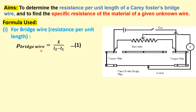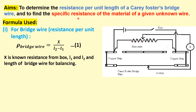Rho can be found out by x divided by (L2 minus L1). If we put the unknown resistance on the left side and note the balancing condition as L1, then put the unknown resistance in the right gap and measure the new balancing condition as L2, then Rho equals x divided by (L2 minus L1), giving us the resistance per unit length for the bridge wire.